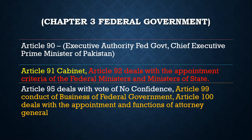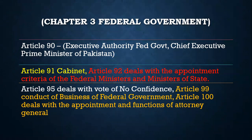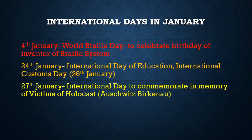Now moving to international days — important international days are frequently asked in exams. I have data specifically for January days. There are many international days but we need to know the specific ones related to exams, particularly those declared by the UN. We also need to know independence days, republic days, and when wars were initiated. Additionally, some continent-specific days like World Chocolate Day, celebrated on 7th July, because chocolate first arrived in Europe on 7th July 1550. Now, January international days: first is World Braille Day, celebrated on 4th January, due to the birthday of the inventor of the Braille system — the system designed to improve literacy for visually impaired individuals, giving them a proper reading method.